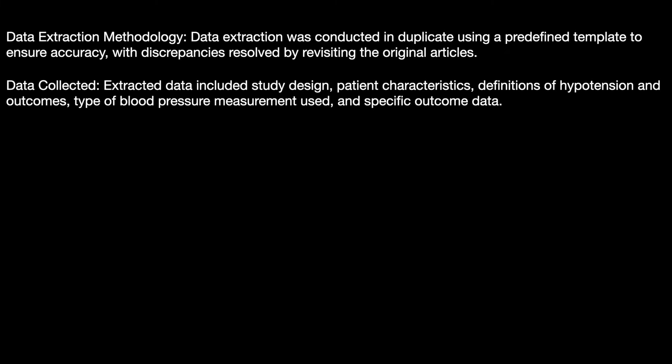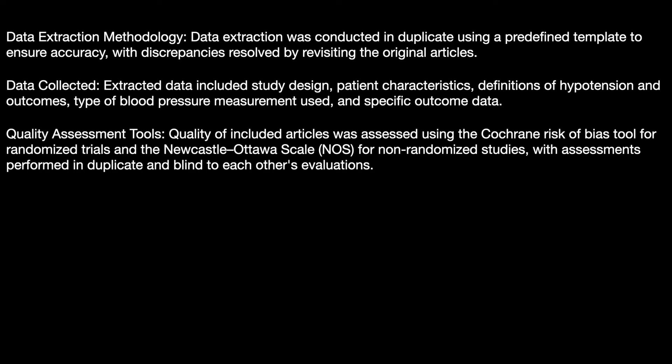Data extraction was conducted in duplicate using a predefined template to ensure accuracy, with discrepancies resolved by revisiting the original article. Extracted data included study design, patient characteristics, definition of hypotension and outcomes, type of blood pressure measurement used, and specific outcome data. Quality of included studies was assessed using the Cochrane risk of bias tool for randomized trials and the Newcastle-Ottawa scale for non-randomized studies, with assessments performed in duplicate and blinded to each other's evaluation.